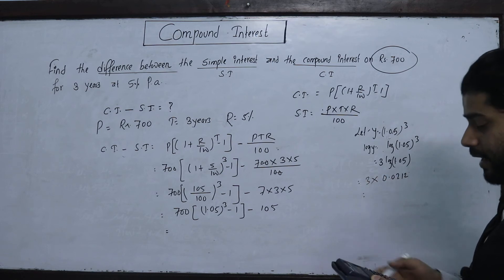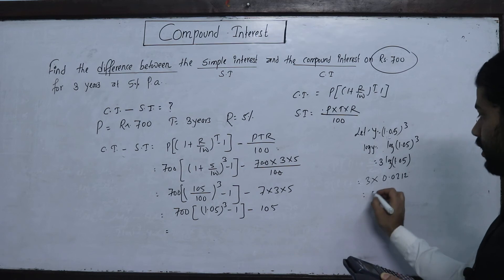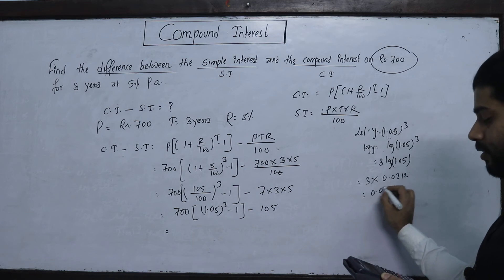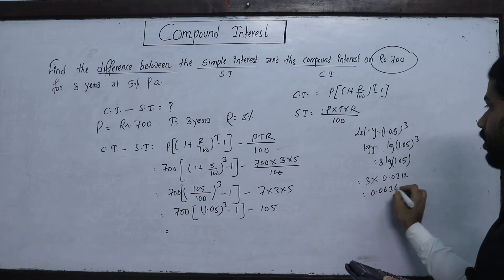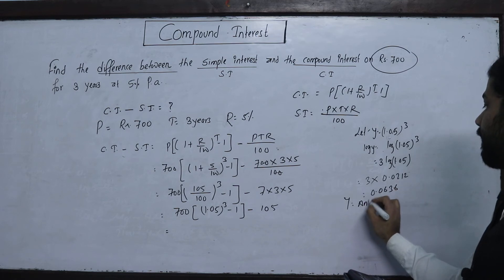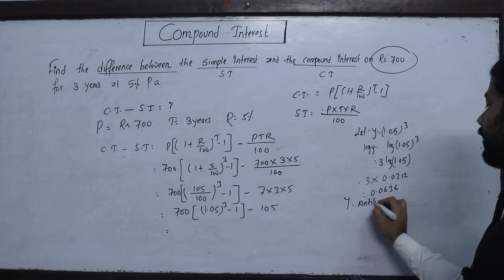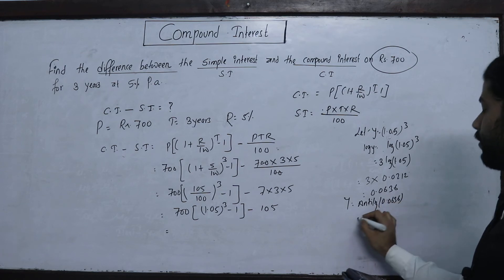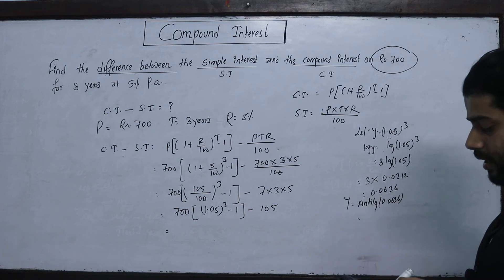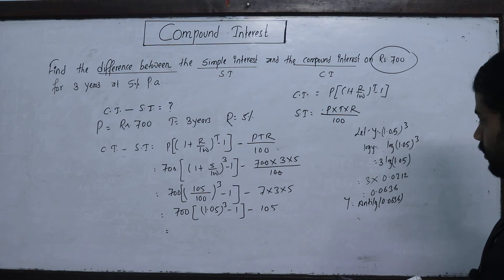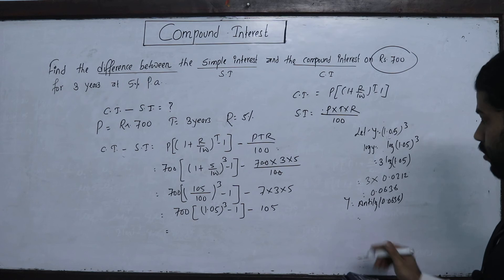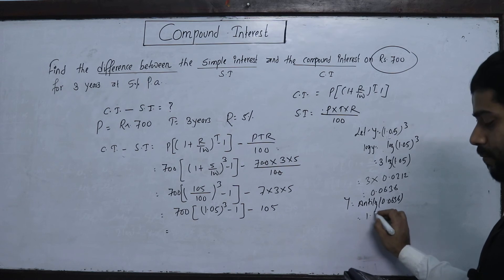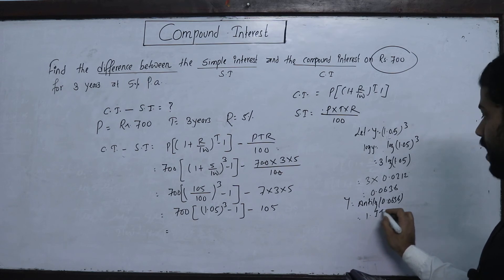Now we multiply: 3 × 0.0212 = 0.0636. Taking the antilog: antilog(0.0636) = 1.1577.